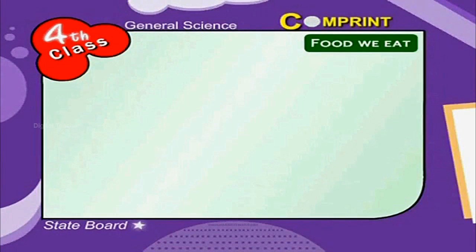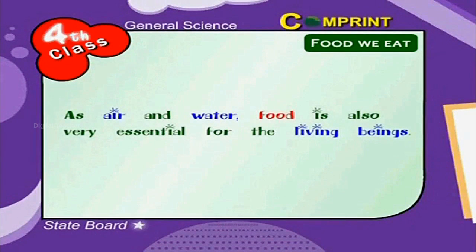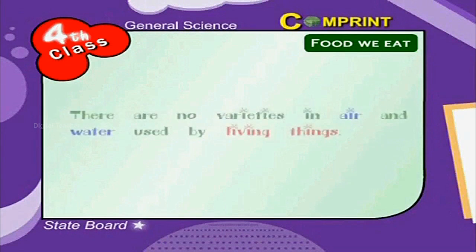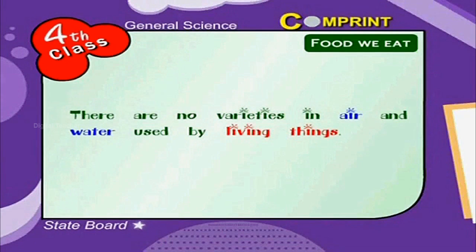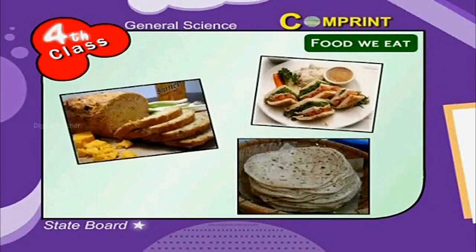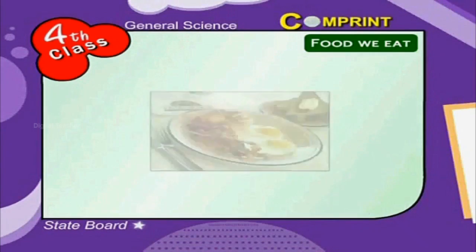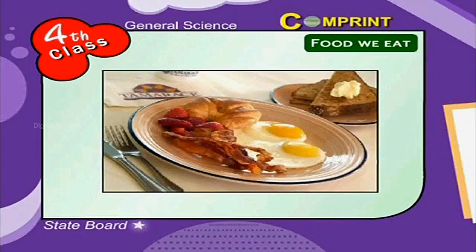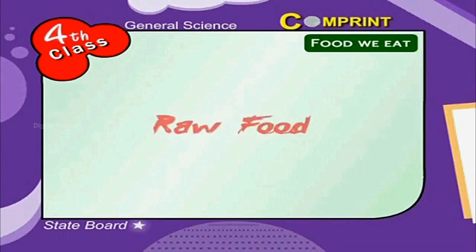Food, like air and water, is very essential for living beings. There are no varieties in air and water used by living things, but there are a number of varieties of food we eat. Each of them is taken in different forms and they contain different nutrients.